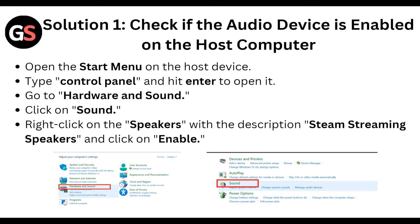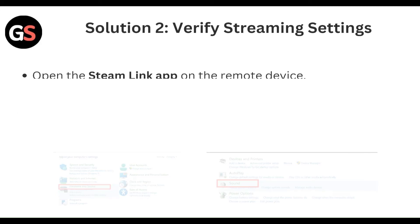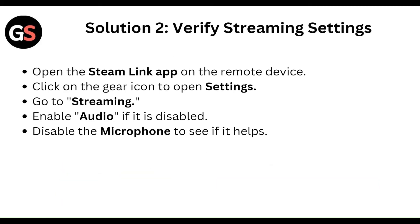First, check if the audio device is enabled on the host computer. Open the Start menu on the host device, type 'Control Panel', and hit Enter to open it. Go to Hardware and Sound, click on Sound, then right-click on the speaker with the description 'Steam Link Speaker' and click Enable.